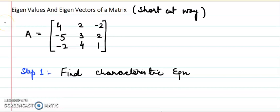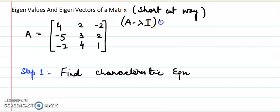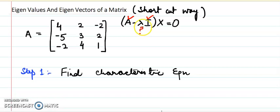In this video lecture I am going to discuss eigenvalues and eigenvectors of a matrix. I have considered a third order matrix. Before starting, let us recall that for eigenvalues and eigenvectors we have to solve the system (A minus lambda I) times X equals the null vector zero.